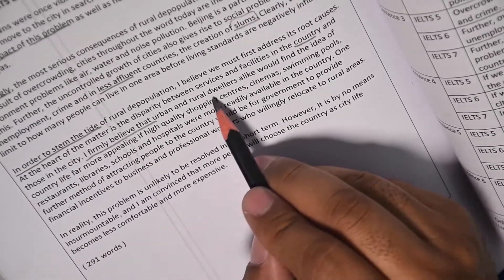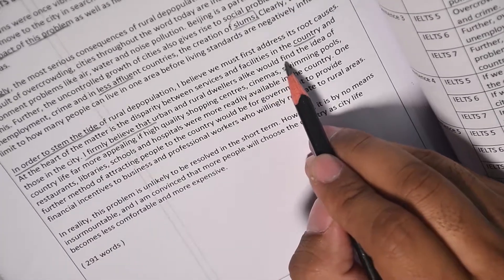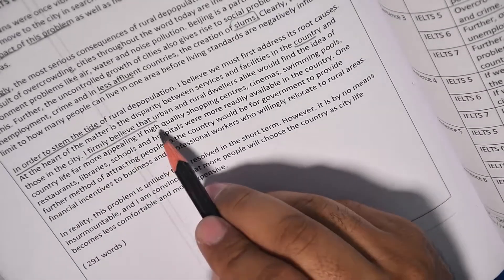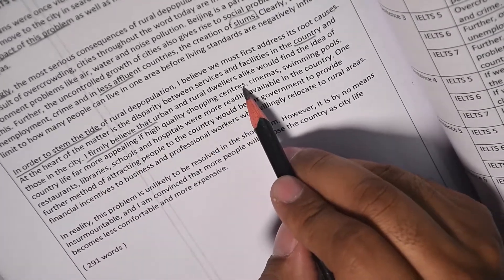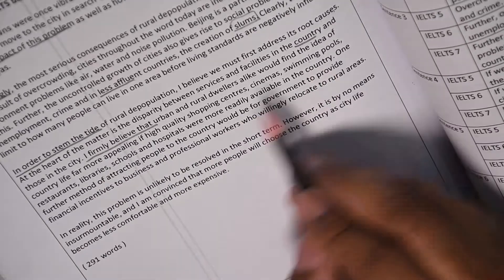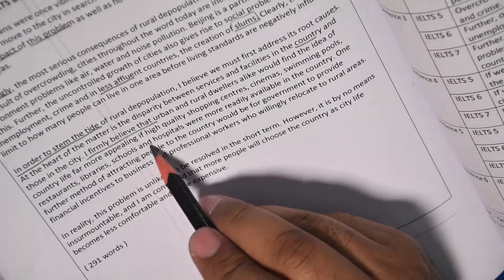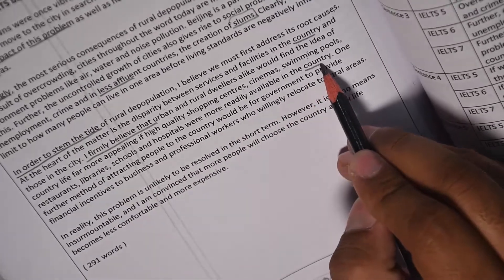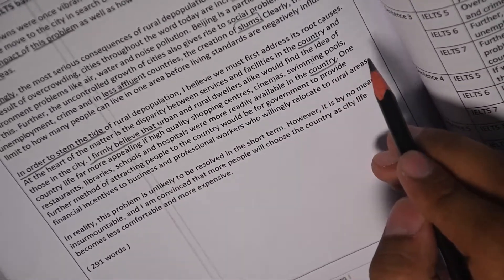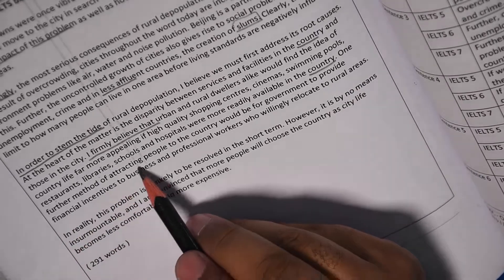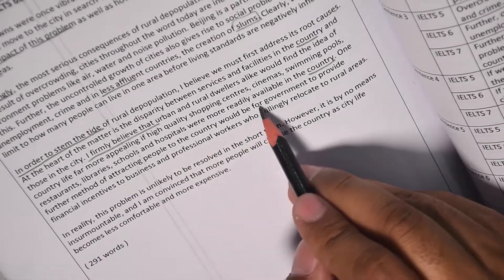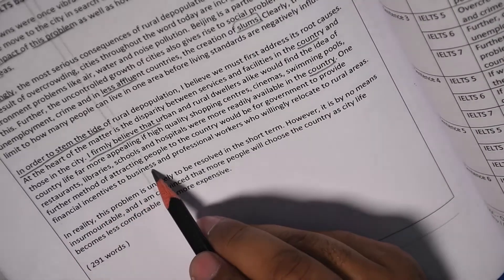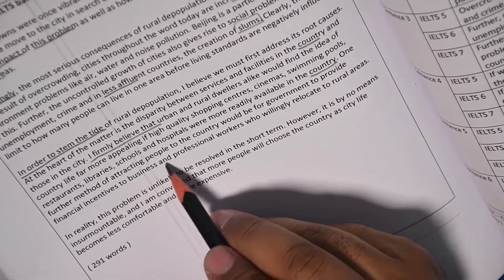I firmly believe that urban and rural dwellers alike would find the idea of country life far more appealing if high quality shopping centers, cinemas, swimming pools, restaurants, libraries, schools and hospitals were more readily available in the country, in the village. One further method of attracting people to the country would be for government to provide financial incentives to businesses and professional workers who willingly relocate to rural areas.